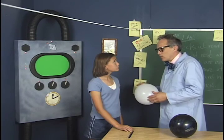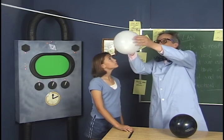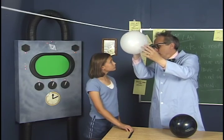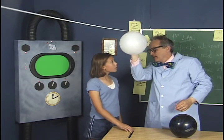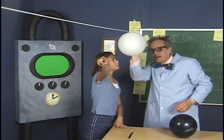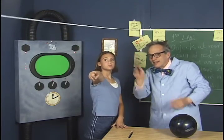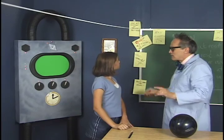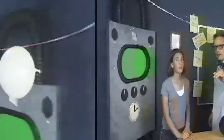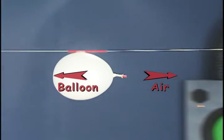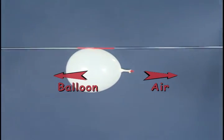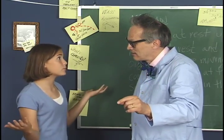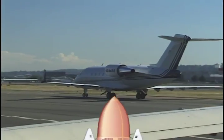Let's try an experiment that shows equal and opposite reactions. Now when I let the air out of the balloon, what do you think will happen? The balloon will go that way. That's because the air going this way makes the balloon go that way. The air going this way makes the balloon go that way. I think this is how a jet airplane works. That's right — and a rocket too.